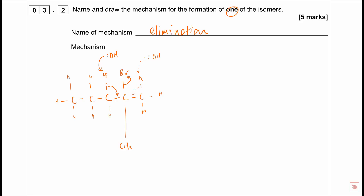The marks are for your curly arrows and your correct structure. You need to draw the structure of the product as well - a sneaky mark. The product has a double bond at one of the positions adjacent to C2. If you attacked the hydrogen on one side, the double bond is internal; on the other side, it's terminal. Either is correct. Four marks for this part.